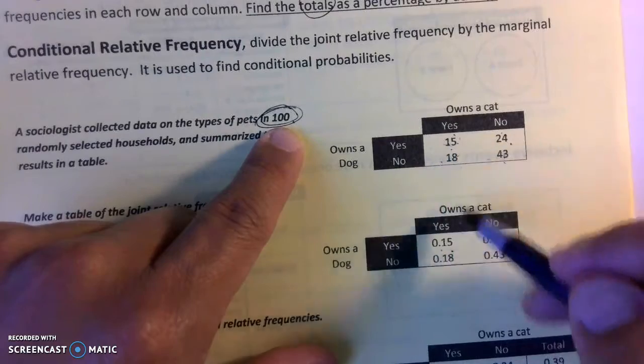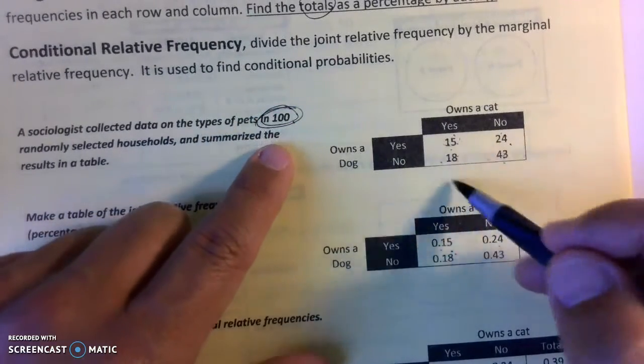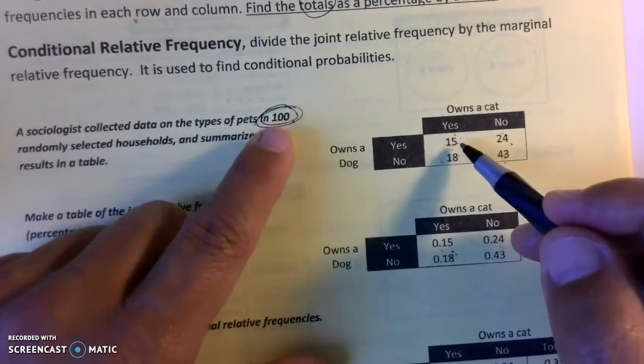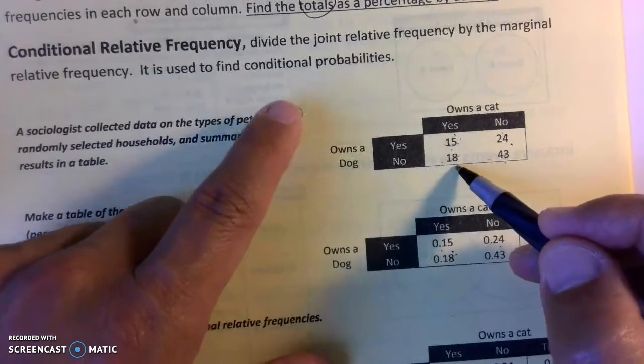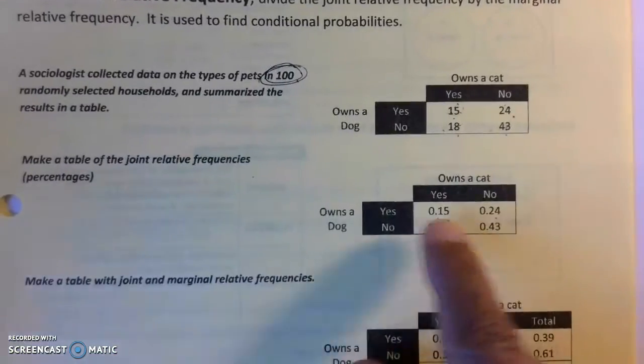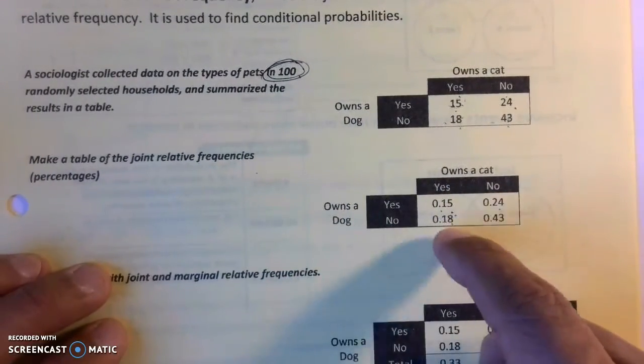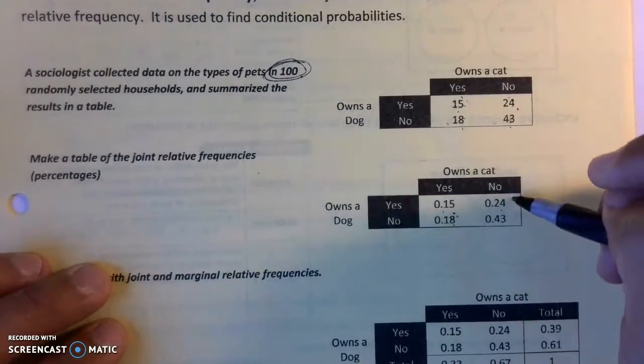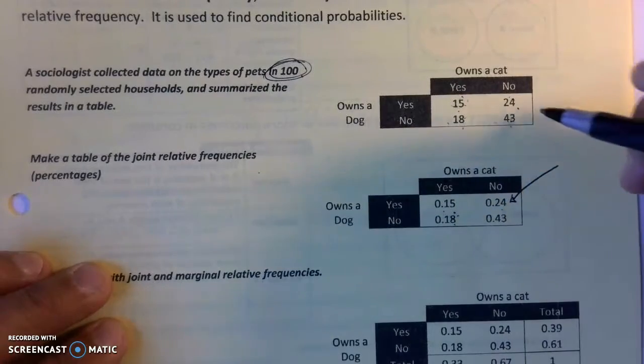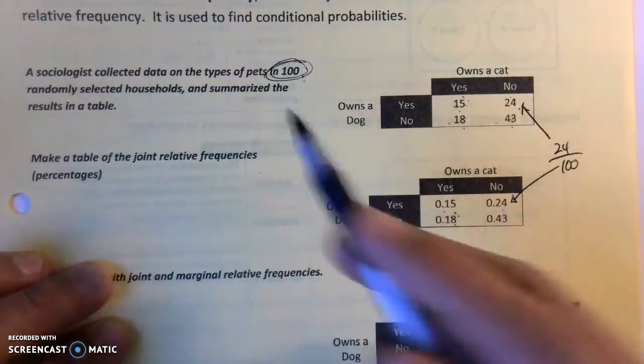It just matches exactly what you see here. But if it was 150 people randomly selected, you'd take 18 divided by 150. Since this is out of 100 people, joint relative frequency just means turning raw data into decimals by dividing by the total. How did I get this number? I took the 24 raw data divided by the total, which is 100.